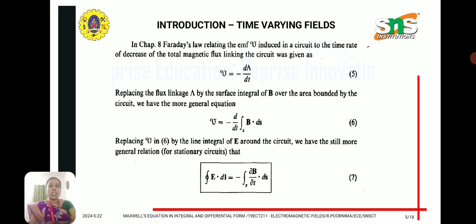Next is Faraday's law, derived from the equation relating the EMF induced in a circuit equal to minus d/dt of magnetic flux. Replacing the magnetic flux by integral B dot ds, we get: integral E dot dl equal to minus ∂B/∂t dot ds. This is the integral form of Faraday's law, the Maxwell equation derived from Faraday's experiment.